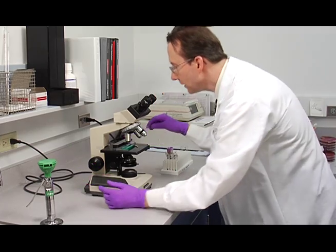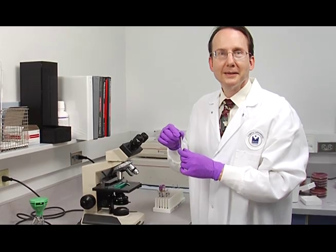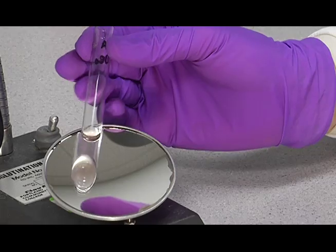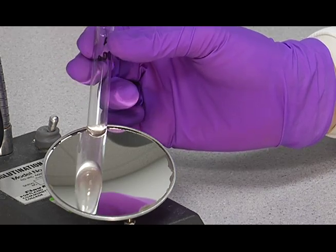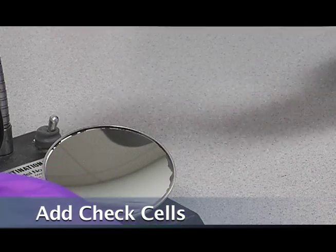And having confirmed the negative results on the D control, then report those results on your result sheet. Now to prove that this is a true negative, we need to add check cells. And that's the next step.